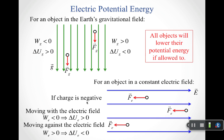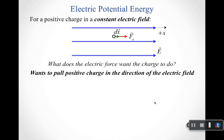Remember: if you release any object within any field, it will always lower its potential energy if given the chance. Whether you're talking about masses in gravitational fields or charges in electric fields, they always attempt to lower their potential energy when released. When a charge moves the way the field drives it, potential energy decreases; when it moves opposite, potential energy increases.